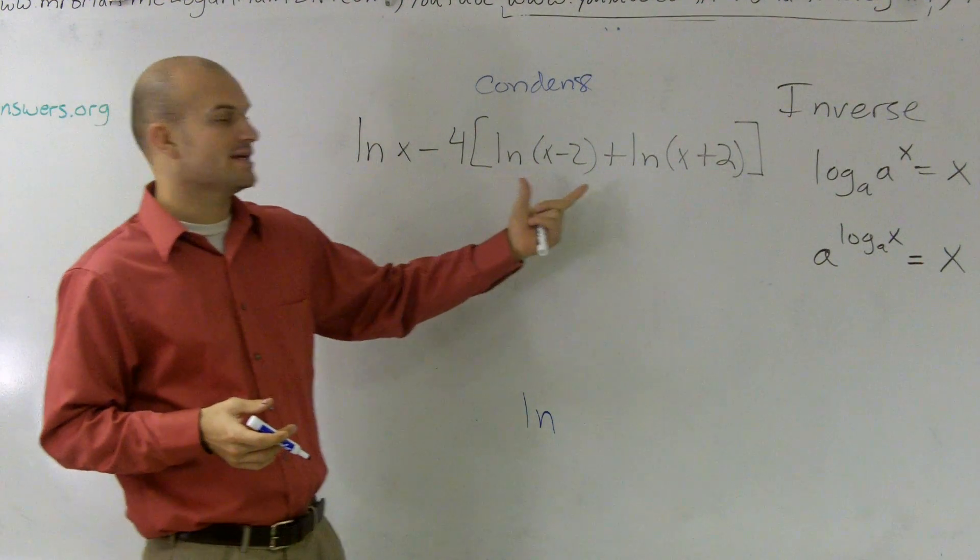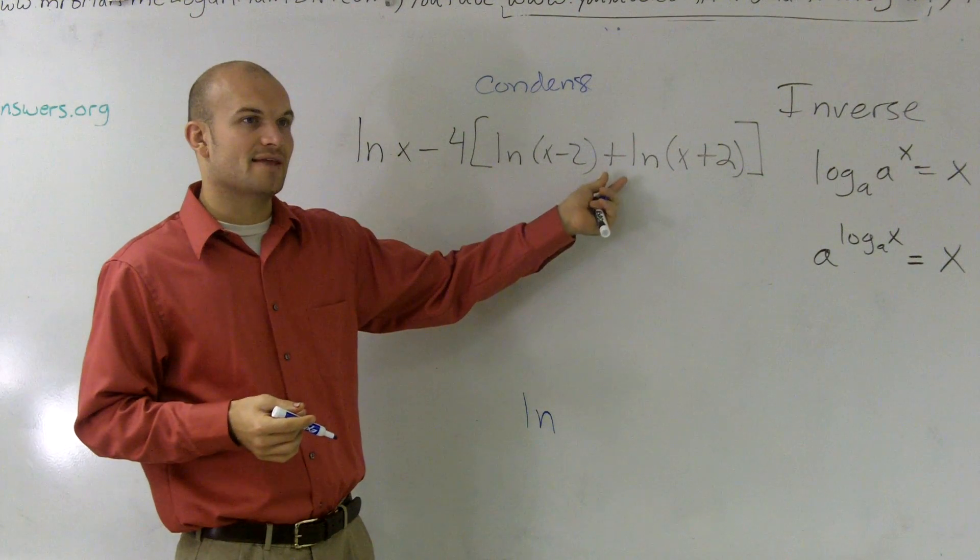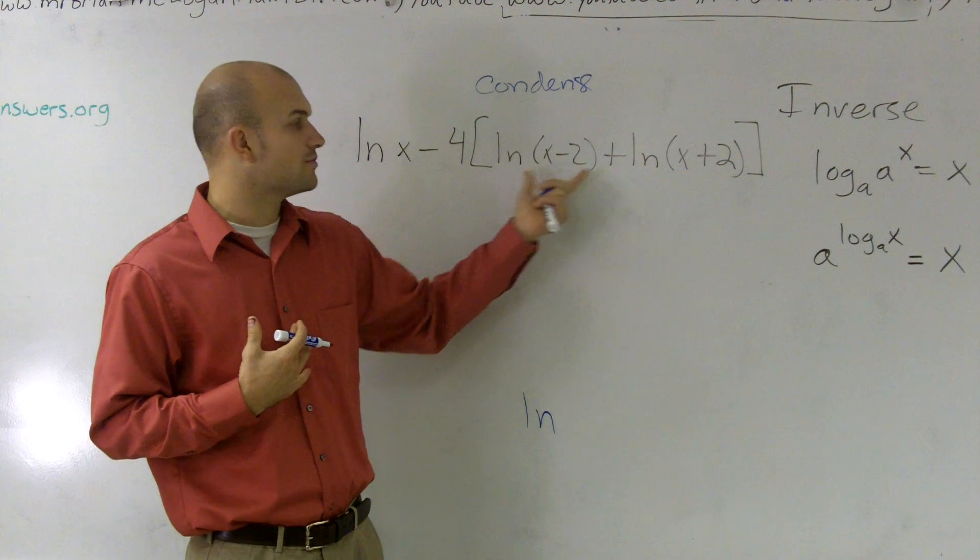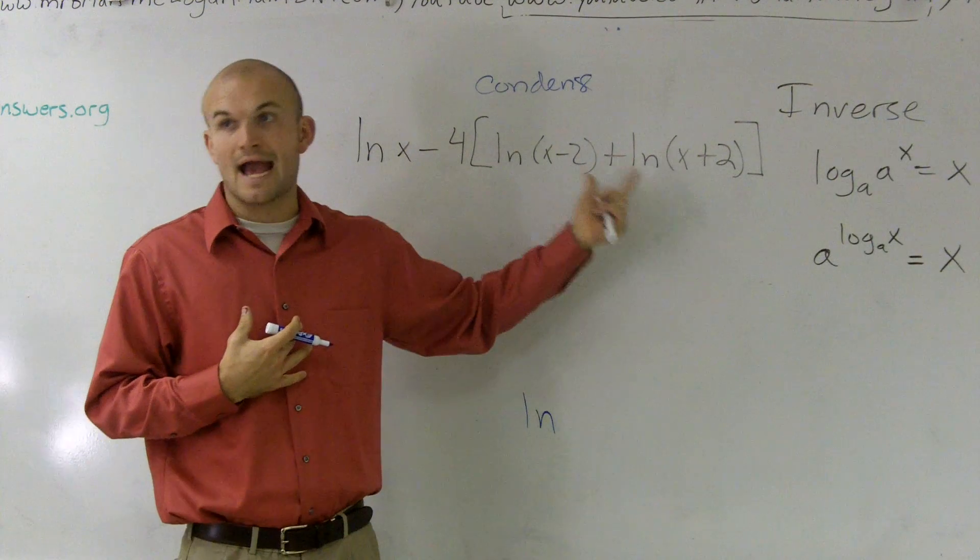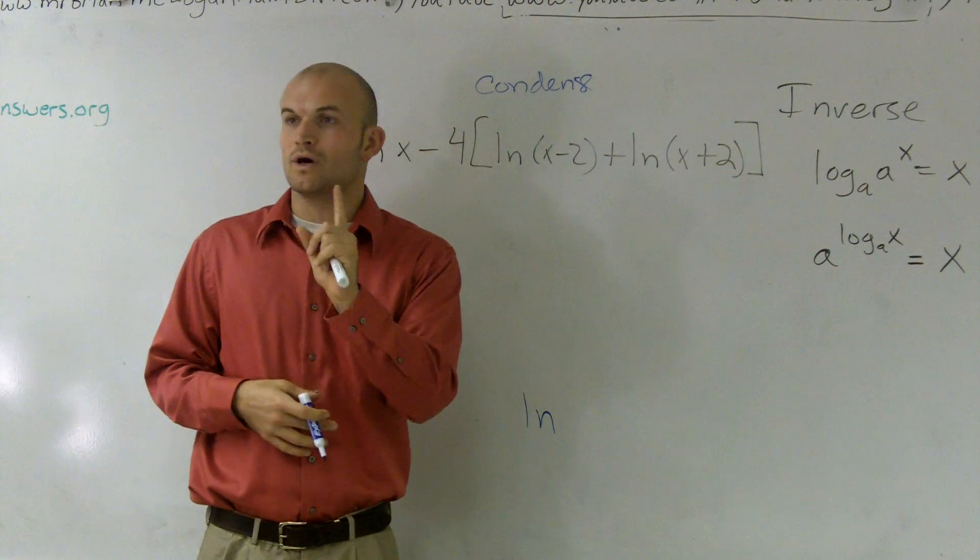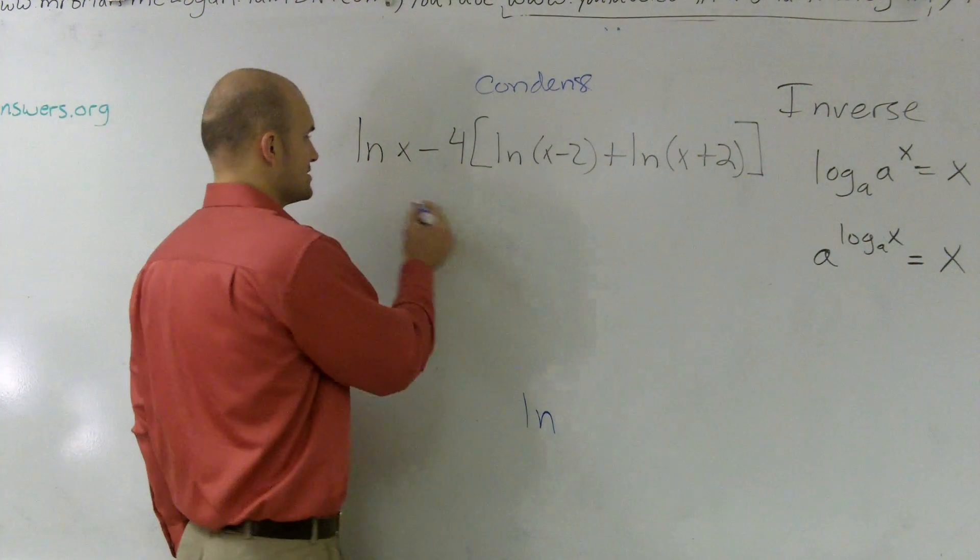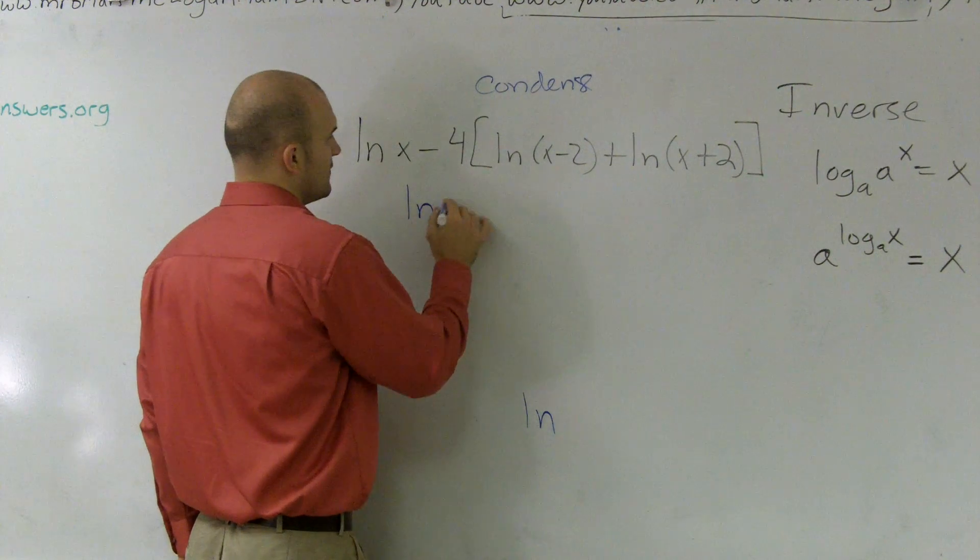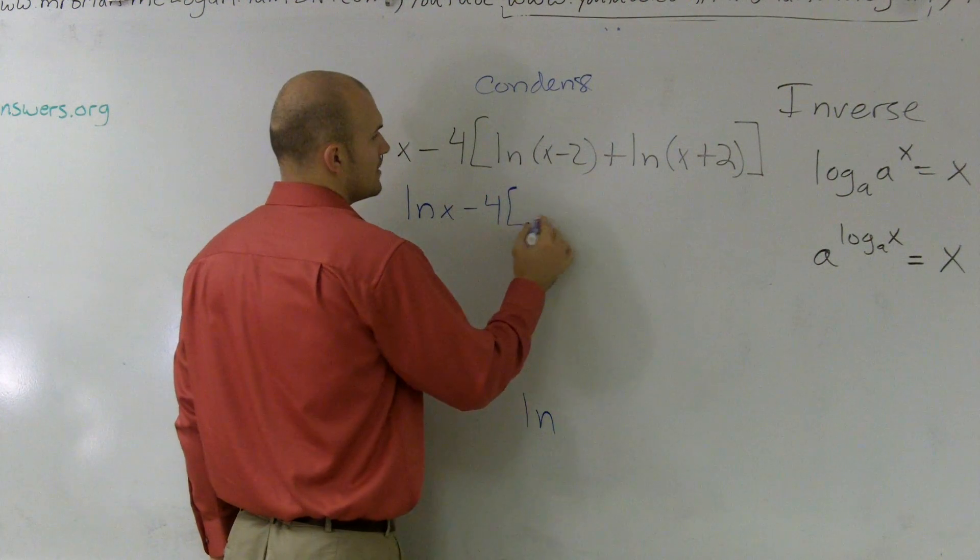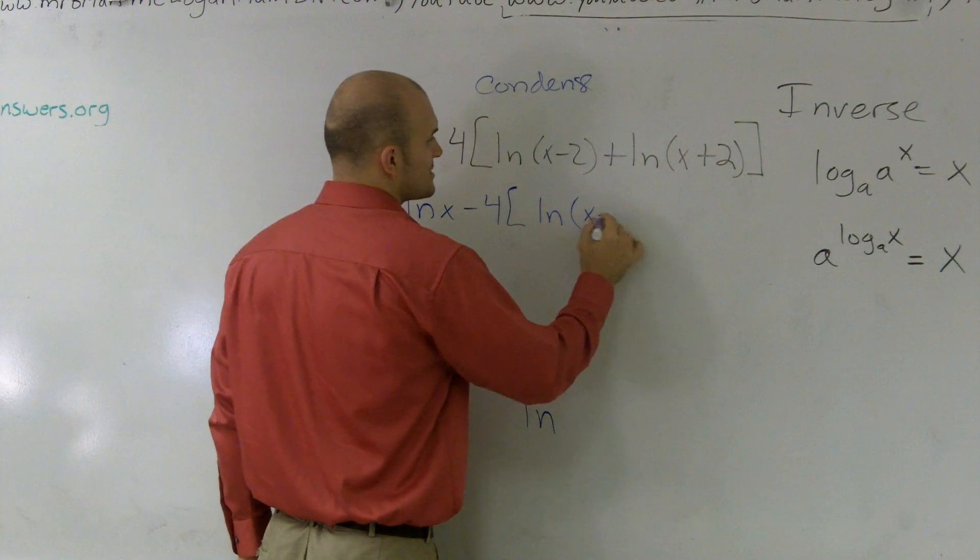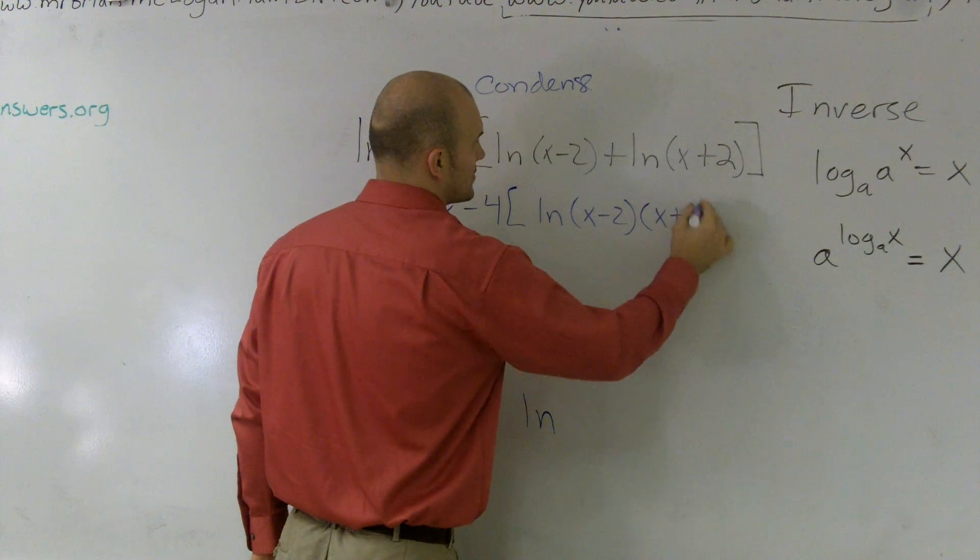I'm going to look inside my parentheses first. I understand that by using properties of logarithms, whenever I have two separate logarithms added, I can rewrite them as one logarithm multiplied. So I can say ln x - 4 times ln of (x-2) times (x+2).